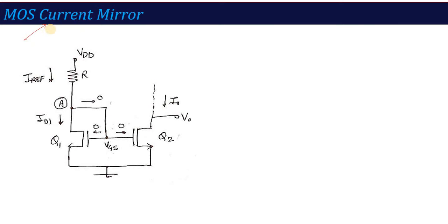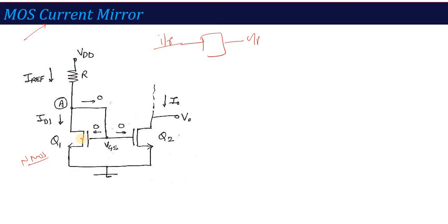MOS current mirror. Like I have told you, there is no change in concept — the current mirror concept is that one circuit in which the output current is equal to the input current. Here you can see the same diagram, but now the BJT is replaced. This is an NMOS circuit, so Q1 and Q2 are MOS transistors — NMOS circuitry. Both gate terminals are combined and drain terminals are shorted. The same thing we have seen in BJT.